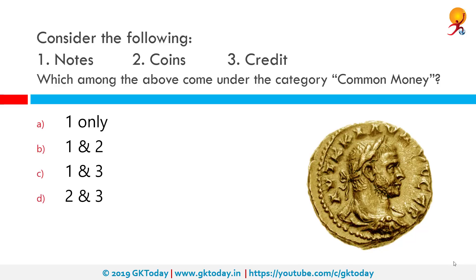Consider the following: 1. Notes, 2. Coins, 3. Credits. Which among the above come under the category of common money? The correct answer is 1 and 2 only. Notes and coins are common money, whereas credit is bank money.